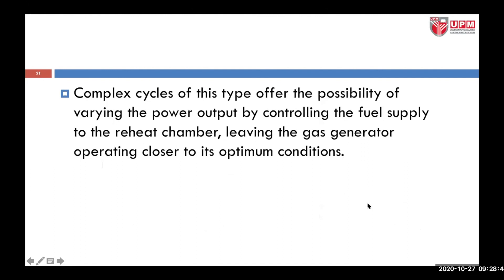In a complex cycle like this, it is possible to vary the power output by controlling the fuel supply to the reheat chamber, leaving the gas generator operating closer to its optimum condition.